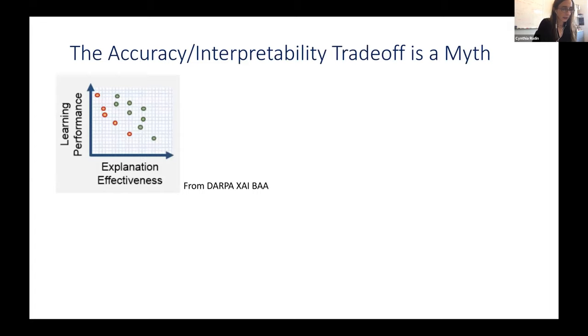I want to make two arguments on why we should stop working on explainable machine learning. The first one is that the accuracy interpretability tradeoff is, as far as I can tell, a myth. I keep seeing this plot all over the place. This particular version of the plot is from the DARPA explainable AI BAA. I don't know why they keep producing this plot because there's no application that corresponds to this plot.